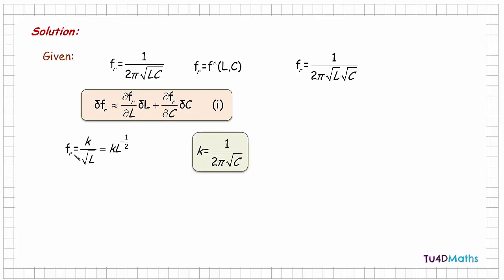First, let's calculate the partial derivative ∂f/∂L — the rate at which the frequency changes with respect to the inductance when the capacitance is kept constant. If the capacitance is kept constant, we can write the frequency as a constant k times 1 over √L, where k = 1 over 2π√C. Differentiating L^(−1/2) gives −1/2 times L^(−3/2), since subtracting 1 from −1/2 gives −3/2. So ∂f/∂L = k × (−1/2) × L^(−3/2).